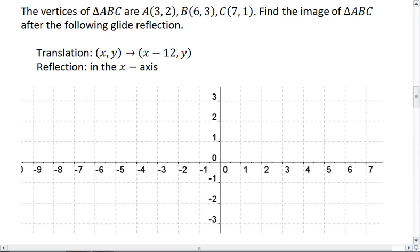So first thing we want to do is map our points. We have A at 3, 2. We have B at 6, 3. And then C at 7, 1. And that gives us our original triangle.